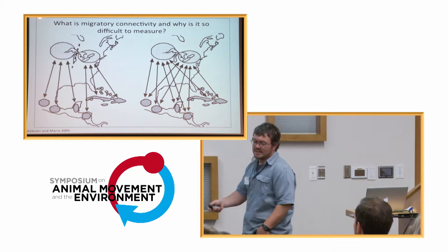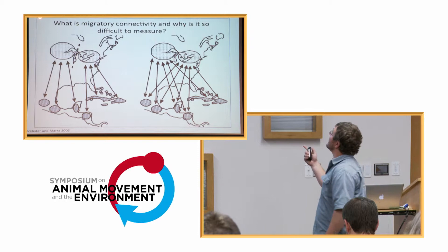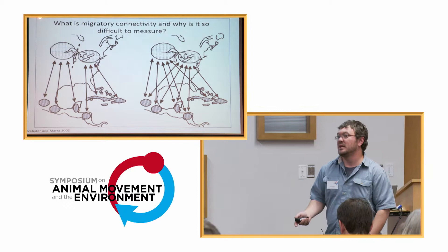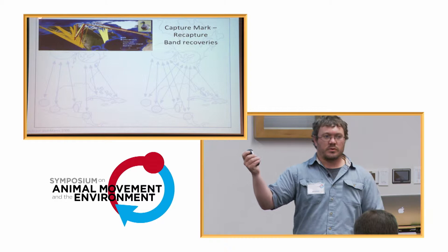So what is connectivity and why is it important and difficult to measure? Connectivity is the geographic link between breeding and non-breeding populations, and the reason it's so difficult to measure is because we have to track individuals throughout the entire year. Without satellites, it's very difficult to track individual birds throughout the year.